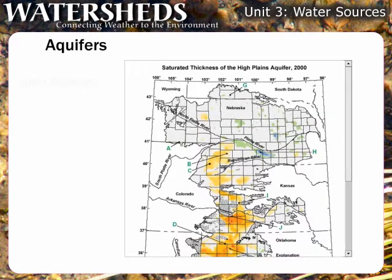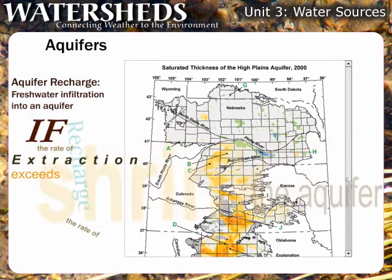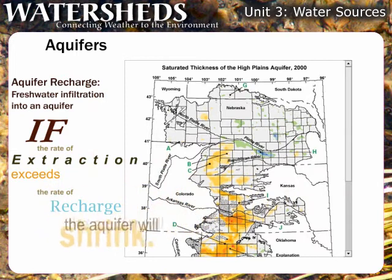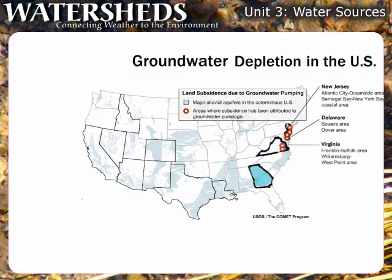Hydrologists can estimate the rate of recharge, or freshwater infiltration into an aquifer from the surface. If the rate of extraction exceeds the rate of recharge, the aquifer will shrink. This is what's happening in many critical water aquifers around the world. Parts of the Ogallala Aquifer in Texas, for example, have been drawn down over 150 feet from pre-development levels. U.S. aquifers are being depleted for both agricultural and drinking water purposes in many regions.